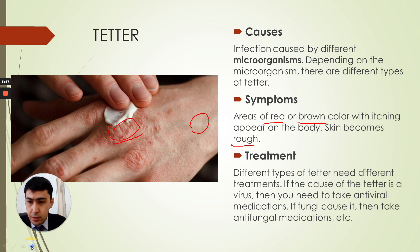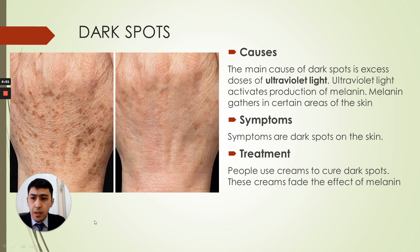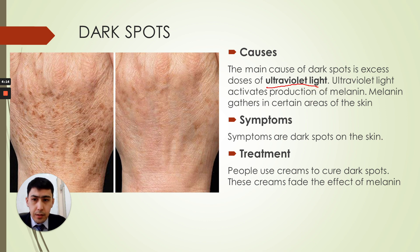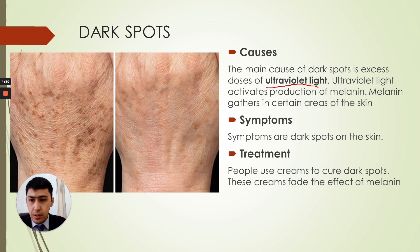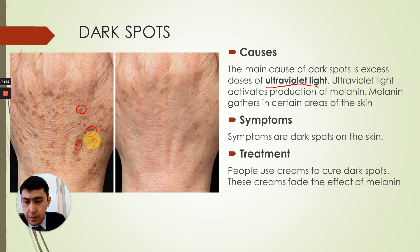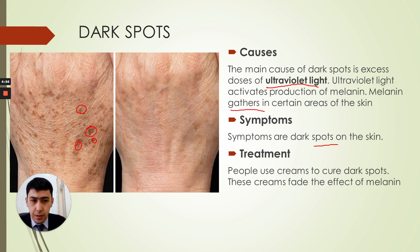The last disease we will study today is dark spots. The cause of dark spots is excess UV (ultraviolet) light, which we get from the sun. As we discussed in the last lesson, a lot of UV light causes the skin to produce more melanin. But in the case of dark spots, the melanin does not spread evenly — it collects in certain spots on the skin.